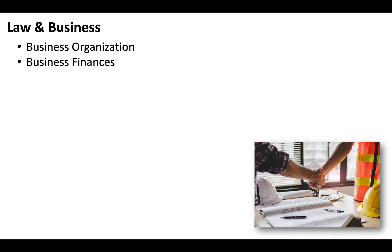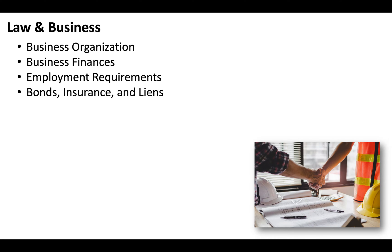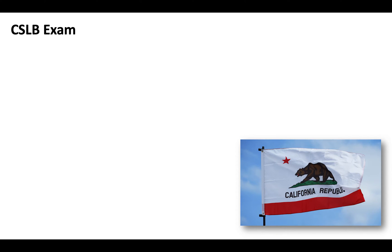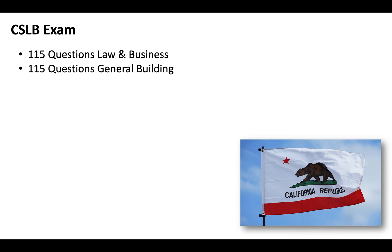When it comes to California contractor licenses that fall under the C Specialty Classification or General A or General B, you'll also need to pass your CSLB Law and Business Exam, which will include sections covering business organization, business finances, employment requirements, bonds, insurance, and liens, contract requirements and execution, licensing requirements, public works, and safety. So essentially, you've got to pass two exams — 115 questions covering law and business and 115 questions covering general building.